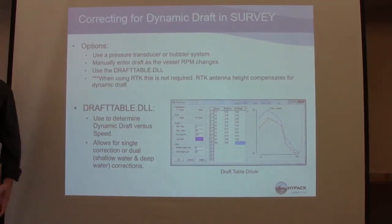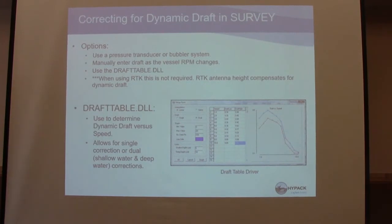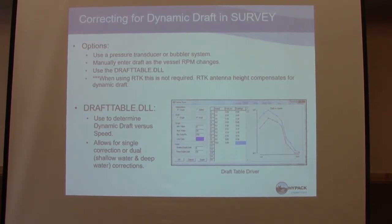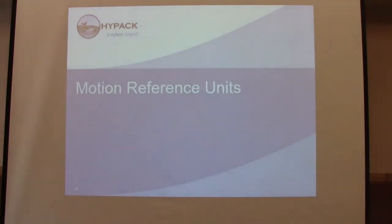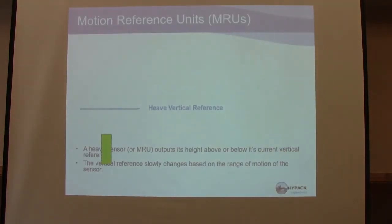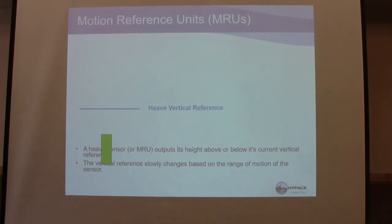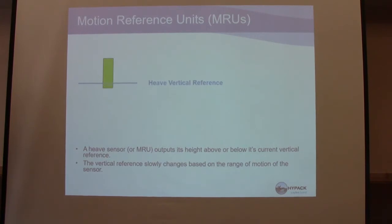How many people use RTK? RTK has become pretty commonplace — it's removed a lot of the referencing we had to do in the past. Heave and motion reference units: the heave sensor outputs its height above or below a current vertical reference. Do you need a heave sensor? The red straight line shows data with heave applied. Green data had no heave, and blue had no heave but was smoothed.